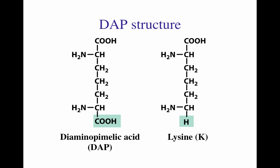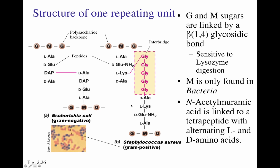Diaminopimelic acid is a derivative of the amino acid lysine. In the R-chain of lysine, where you would have a hydrogen molecule, you now have a carboxylic acid molecule. Therefore, you have two ends that can form a peptide bond: one at the original alpha carbon with the carboxyl group, alpha carbon, and amino group, and another at the end of the side chain with another carboxylic group, a carbon, and another amine group.